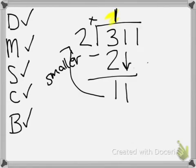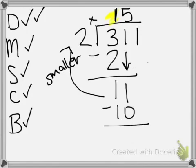Now they start the process all over again. How many 2s go into 11? 5. You can say: 2 times what gets you close to 11 but not going over, because you don't want them to pick a bigger number. So they do 5. Now we multiply: 2 times 5 — the digit they just put up there — is 10. We're at subtract: you should have 1 left over.